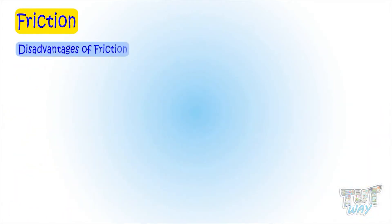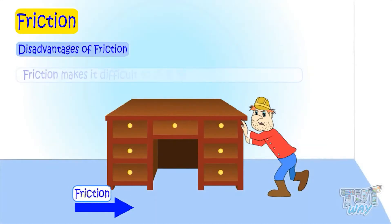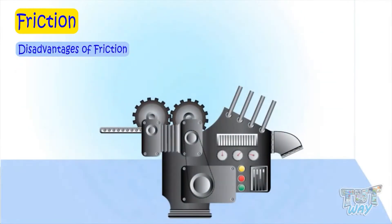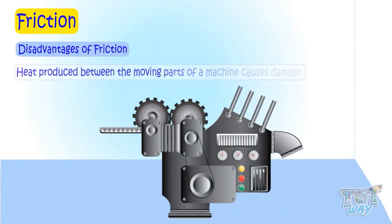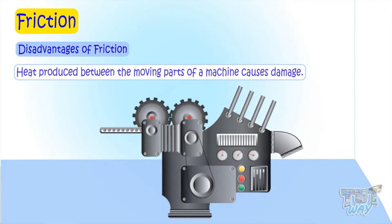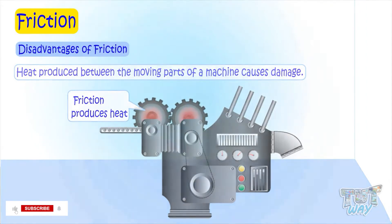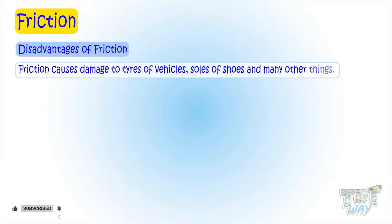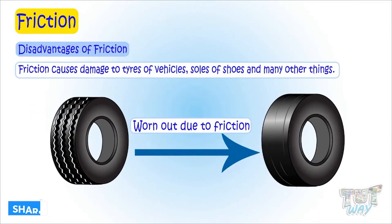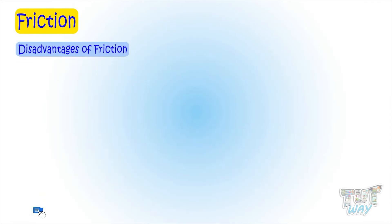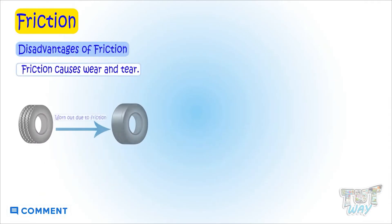Now let's learn the disadvantages of friction. Friction makes it difficult to slide heavy objects on the floor. Every machine has several parts that move together or rub against each other, because of which a lot of heat is produced in the machine and damages it. Friction also causes damage to the tires of vehicles, the soles of shoes, and many other things — so friction causes wear and tear.